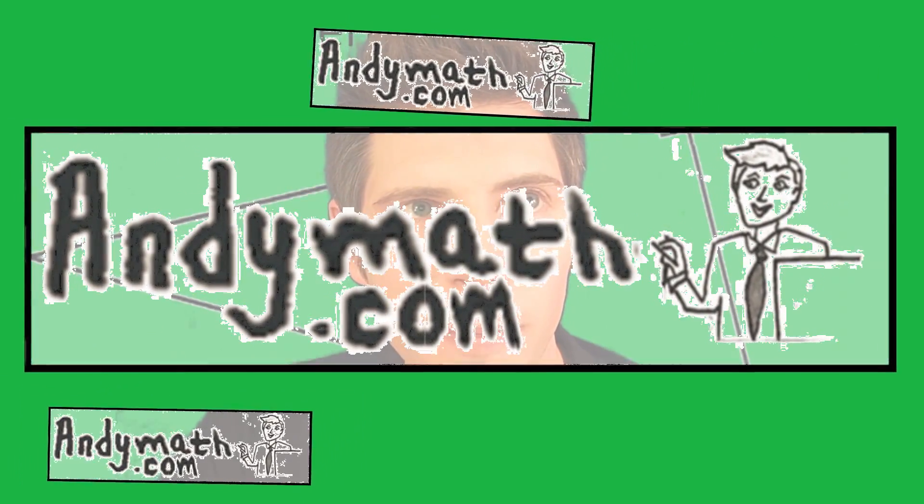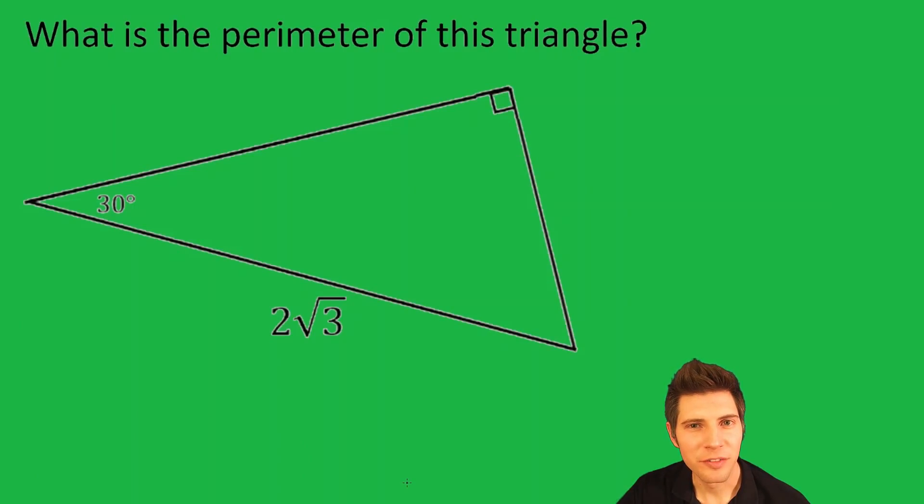Andy Math says, what is the perimeter of this triangle? Since this triangle has a right angle and a 30 degree angle, we know it's a 30-60-90 triangle. Every 30-60-90 triangle follows the same set of rules.